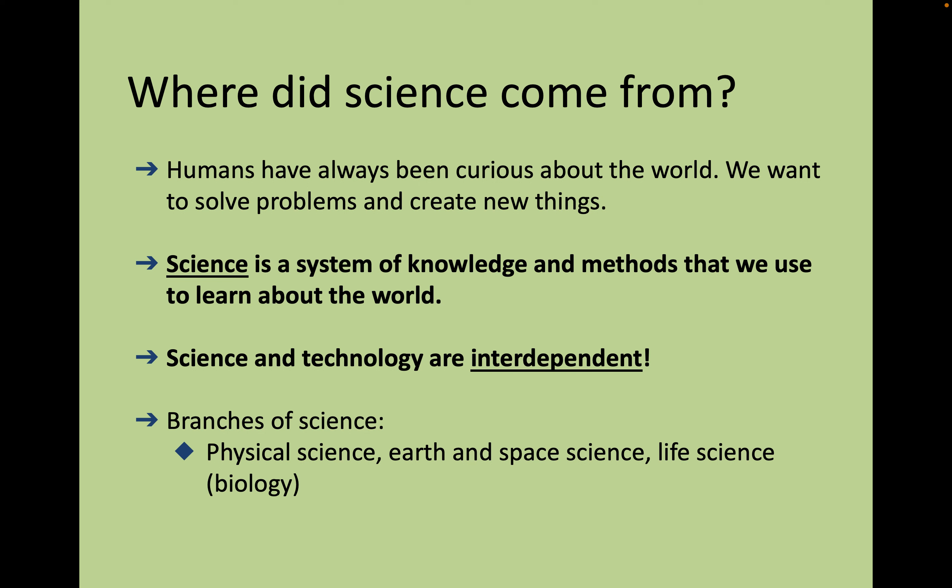If you'd like to abbreviate these definitions, that's fine too — I know there's a lot of words. Science is a system of knowledge and methods that we use to learn about the world. We've been using it to solve problems for a while, so science is really a way to figure out solutions to things that happen. Science and technology are interdependent — dependent on each other. Inter means together, they're dependent on each other. So every time technology advances, science can advance. We couldn't see cells until we invented microscopes, and we couldn't do all the things that computers do before they were invented.